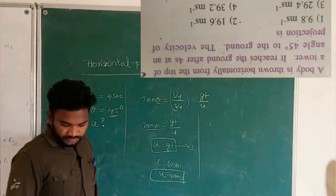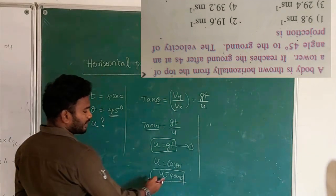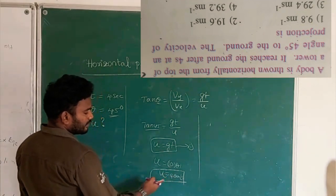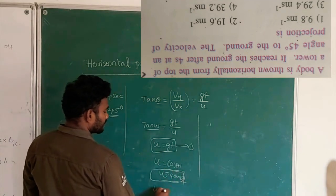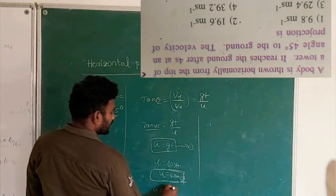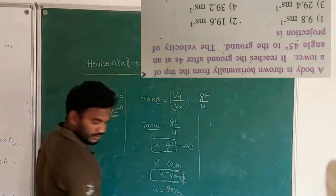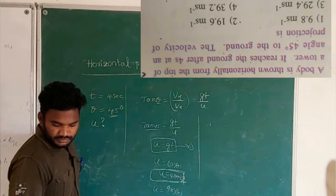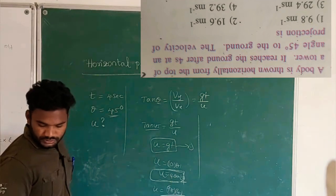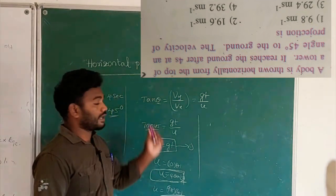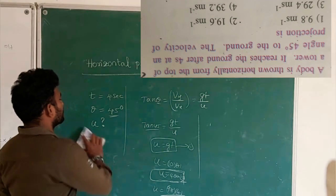If g = 9.8 is used, then U = 9.8 × 4, giving a different answer as shown in the answer key. You can check once. Make a note of this.